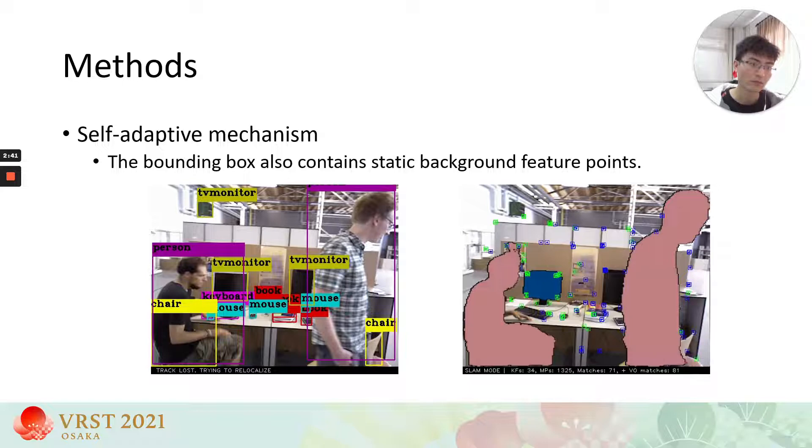Sometimes, moving objects can occupy a large field of view when they are very close to the camera. Removing too many feature points could lead to system tracking failure. To avoid this problem, we need to retain as many feature points as possible. In this case, using segmentation mask can improve the robustness of the system.